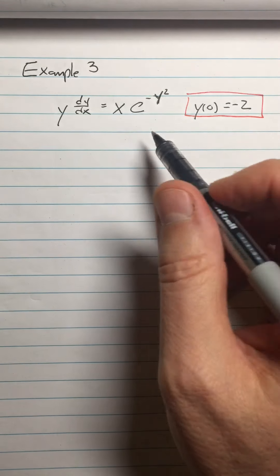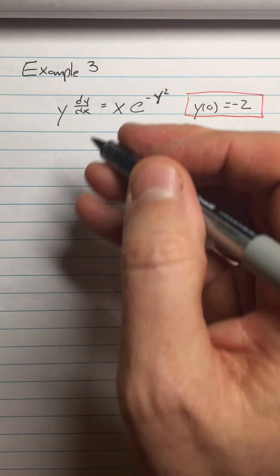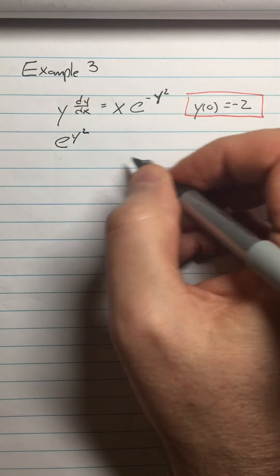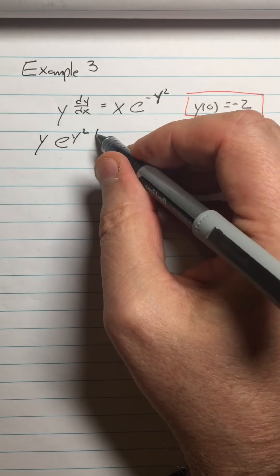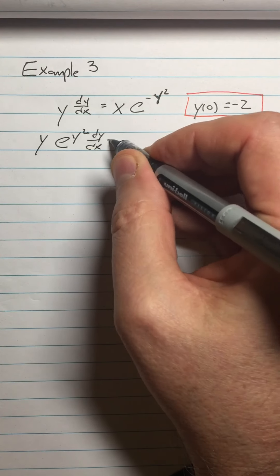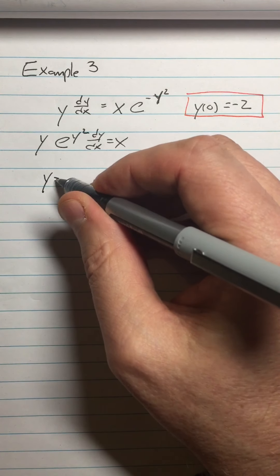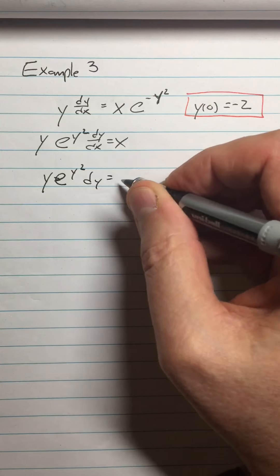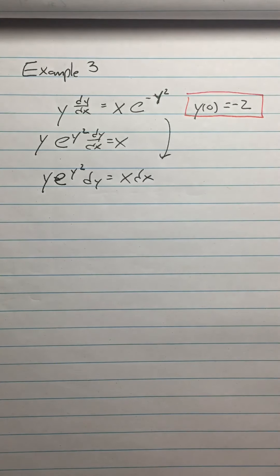All right, so we need to get the y's over here and the x's over here. Watch for things like e to the negative y squared because I could just put that on the other side as e to the positive y squared, right? Just multiplying both sides by e to the y squared. Still got a y here. I've got a dy dx. I wanted to put the dx on the other side. I guess that I'll do that on another step.